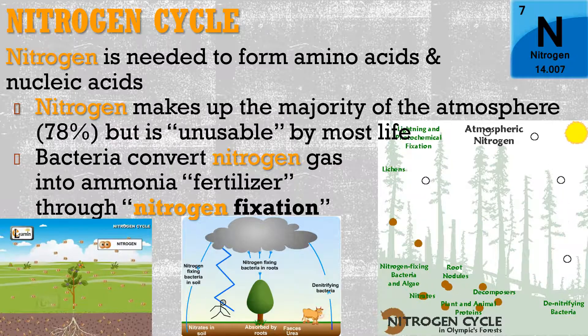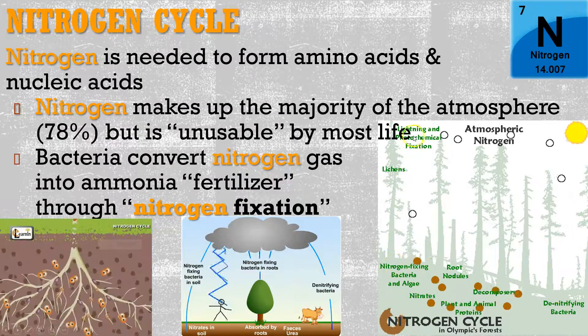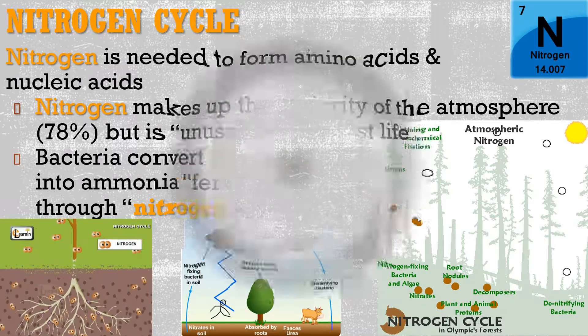So nitrogen has its own cycle. Some of that nitrogen is going up through those denitrifying bacteria, and then we've got those nitrogen-fixing bacteria. And actually, lightning even plays a role in this, helping convert some of the nitrogen.